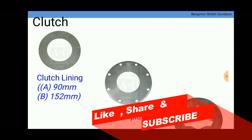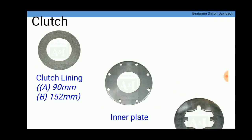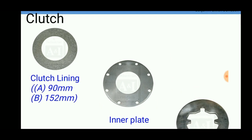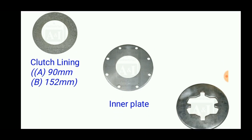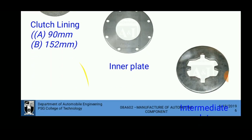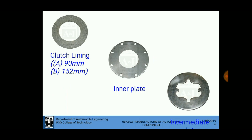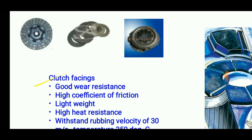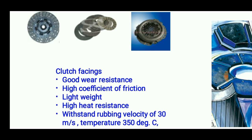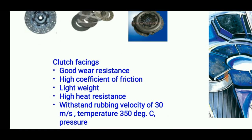This part shows the clutch lining, which is the friction material, the inner plate, and the intermediate plate — these are fixed at a stretch. Clutch facings should possess good wear resistance.